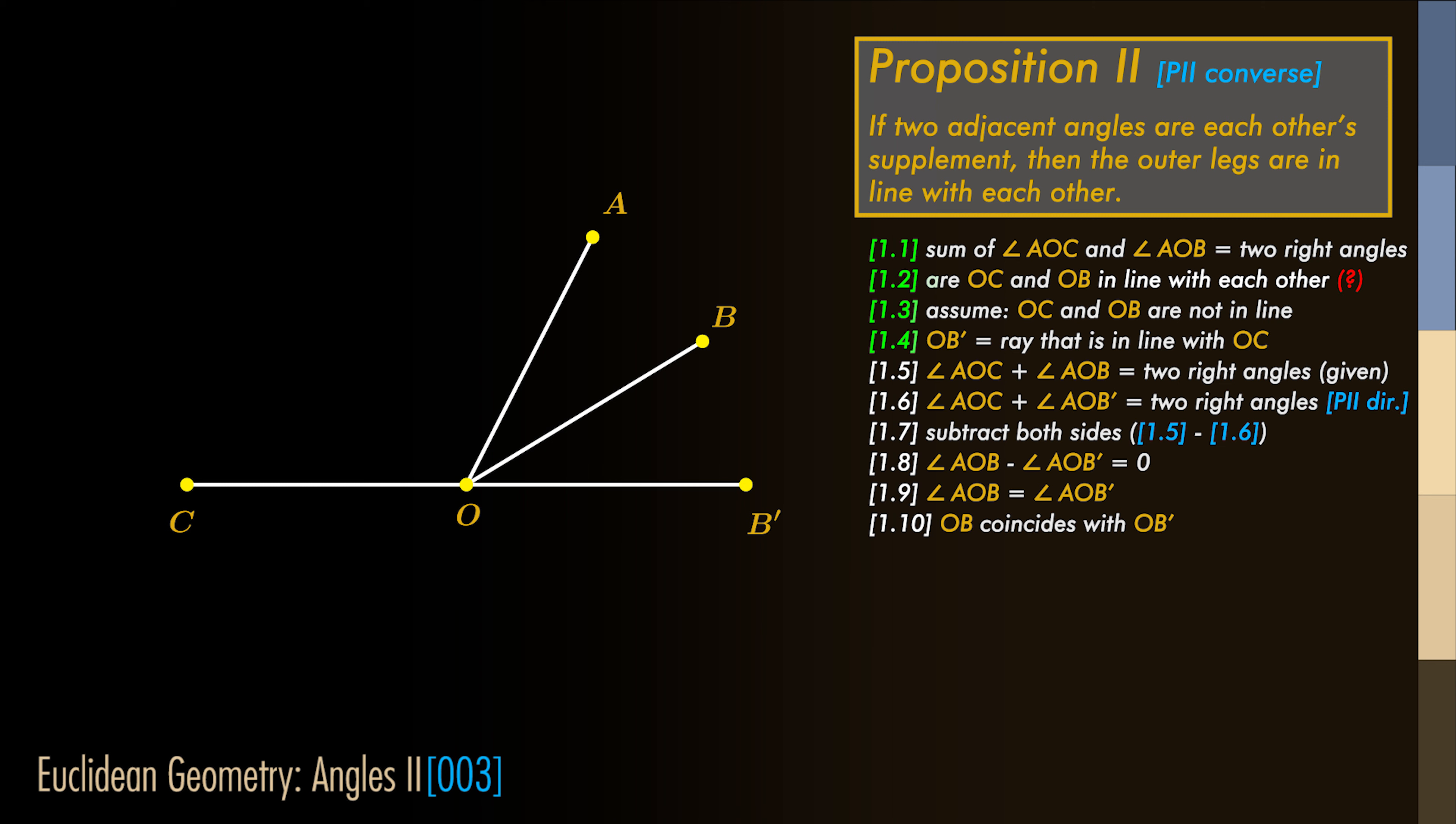Two equalities are now clearly valid. The first one: the sum of angle AOC and angle AOB is equal to two right angles, because that's what's given.